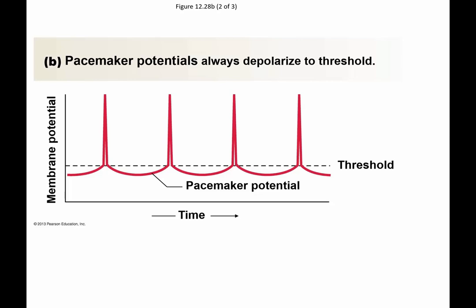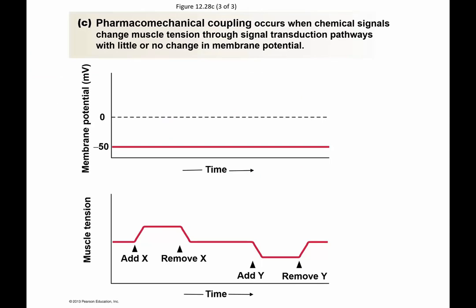With a pacemaker, every time the resting membrane potential increases it crosses threshold and generates an action potential. There are also cells that respond to chemical signals without depolarizing — the membrane potential remains steady at minus 50 millivolts while muscle tension changes because calcium concentration is being regulated without varying the membrane potential. Adding drug X increases tension; removing it decreases tension. Adding drug Y causes further relaxation; removing Y returns tension to baseline. This is an example of pharmacochemical coupling separate from changes in membrane potential.